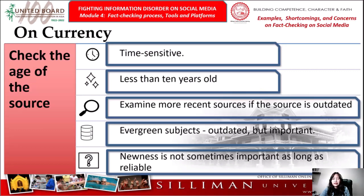Second, in the academe, references that are less than 10 years old are typically preferred. You might also need to examine more recent sources if the source is outdated to determine if the data has changed. Note that there are what you call evergreen subjects — their sources may be outdated but equally important. Newness is not sometimes important as long as it is reliable.